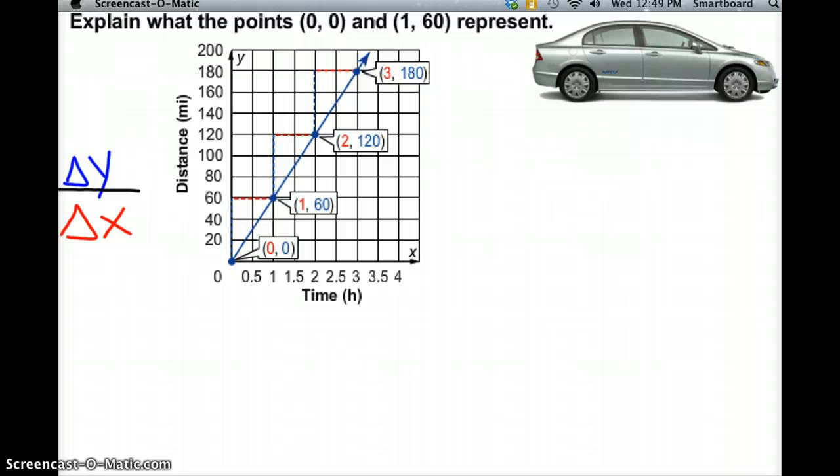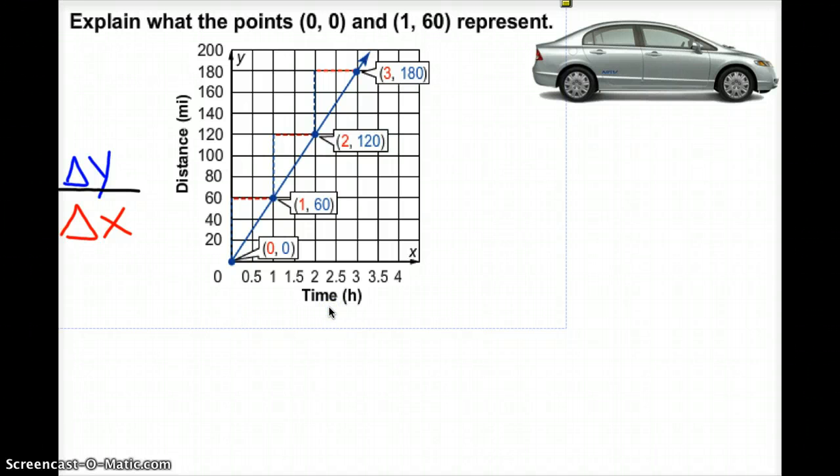If we look at this example here, this graph talks about how fast a car goes, how many miles it goes in an hour. You'll notice that the x value is time, and the y value is distance in miles.